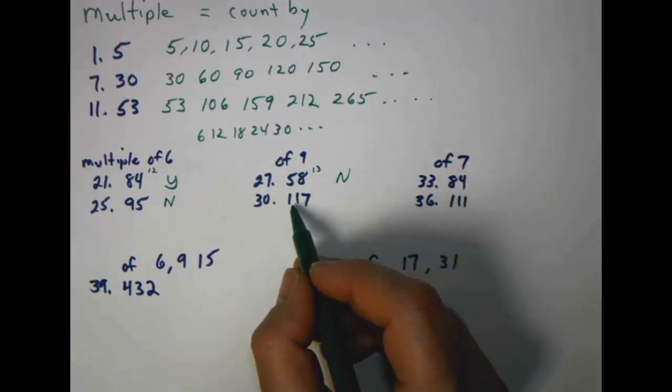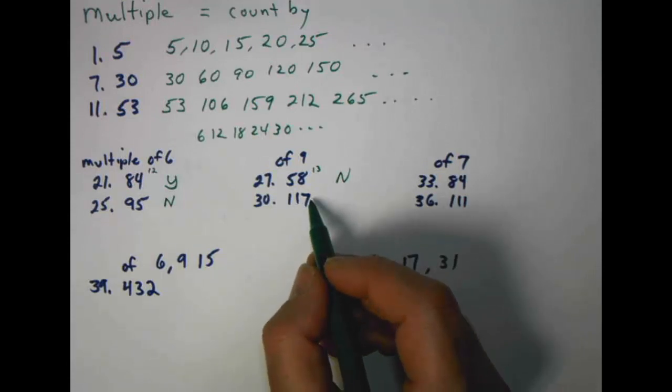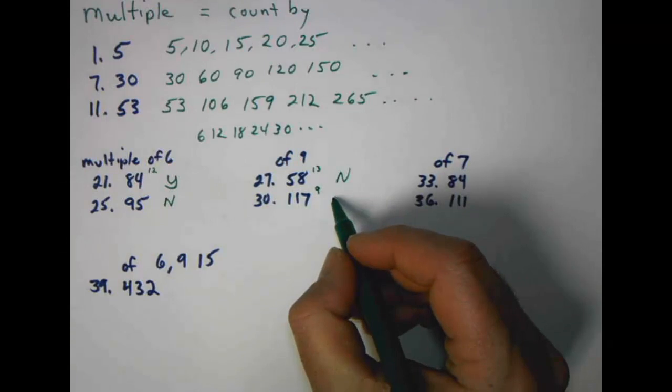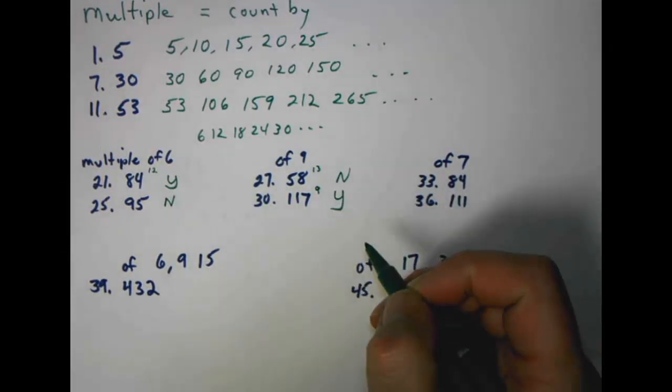Problem number thirty. One, one, and seven are our digits for a hundred and seventeen. It totals up to nine. Nine goes into nine. Therefore, nine is a multiple. Of course, a hundred and seventeen is a multiple of nine. It's going to be yes. It's a factor.